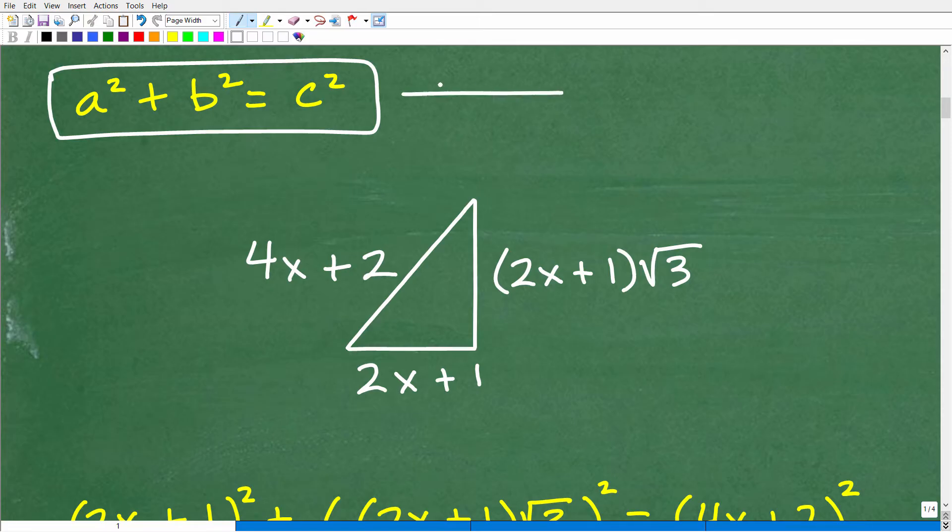Now, if you are dealing with a right triangle, okay, if you have a right triangle, then this holds true. So in other words, if you have a right triangle, then this is true, okay? Now, what is this? Well, this is the Pythagorean Theorem. And it states that the relationships of the sides of a right triangle holds true. This relationship holds true.